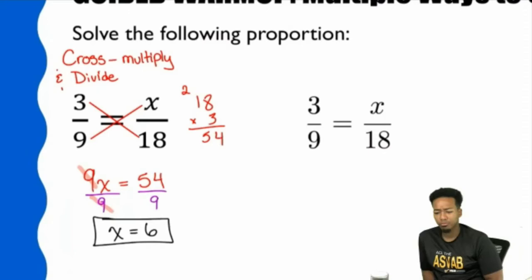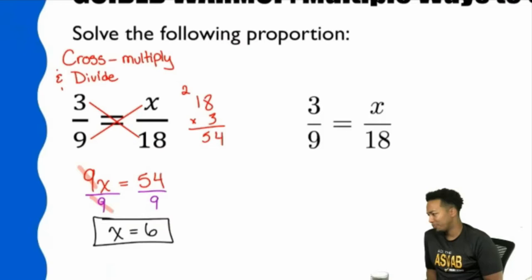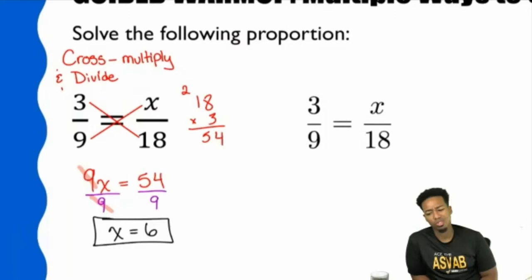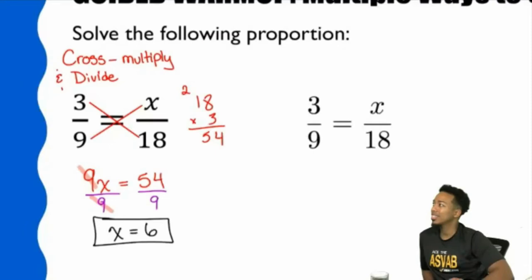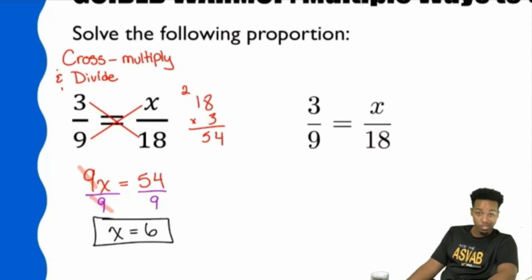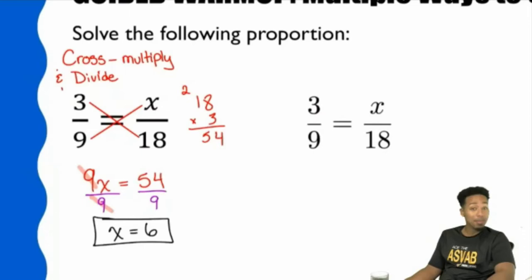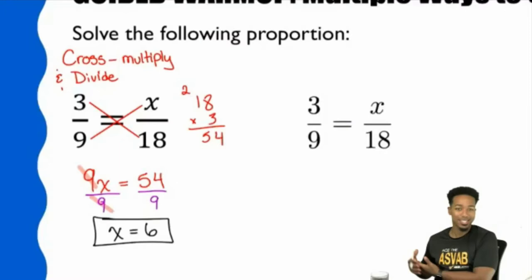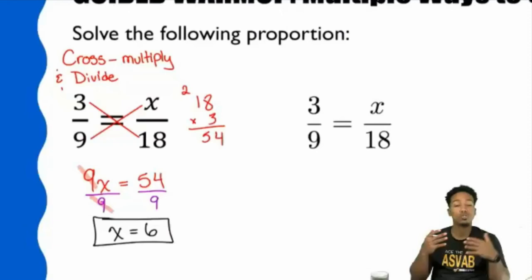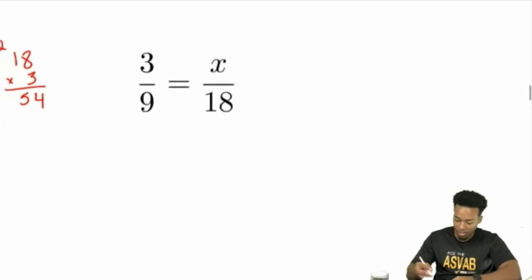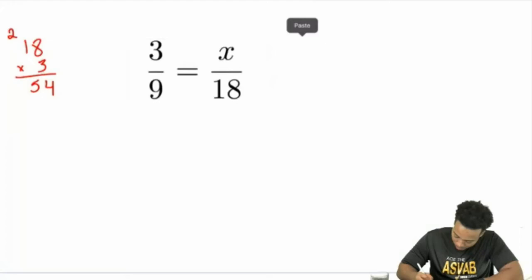On the ASVAB, you are timed. What happens when you have crazy funky numbers like 27 over 121 equals 76 over x? You're not going to enjoy doing that kind of math. This is why it's important to understand how to do things more than one way — it's going to help you generate ideas and confidence when you're working. Let me go ahead and copy this and show you the third way.